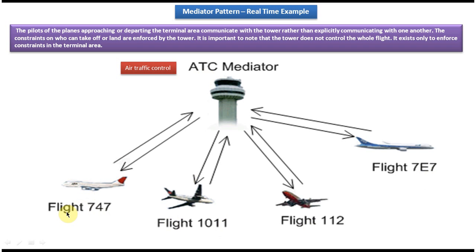Suppose this flight 747 wants to land in a particular terminal in the airport. Then what the pilot in this flight will do is he will communicate to the ATC mediator saying he wants to land flight 747 in the particular airport terminal. Then what this ATC mediator will do is it will check whether any flight is there in that particular terminal or not.